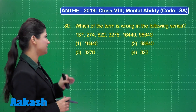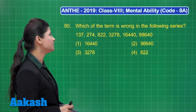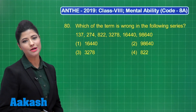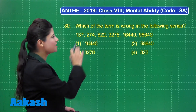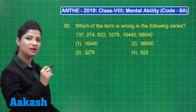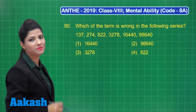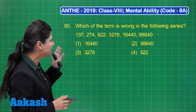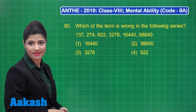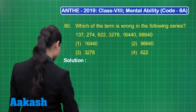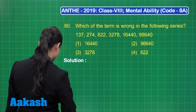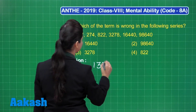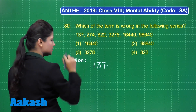Let us take up question number 80. It states: which of the following terms is wrong in the following sequence? A numeric sequence is provided, and you need to obtain the wrong term after decoding the pattern followed in this sequence. The first number is 137 and the next number is 274.